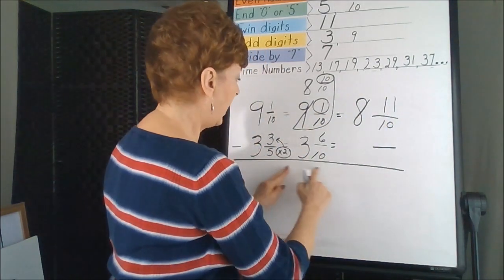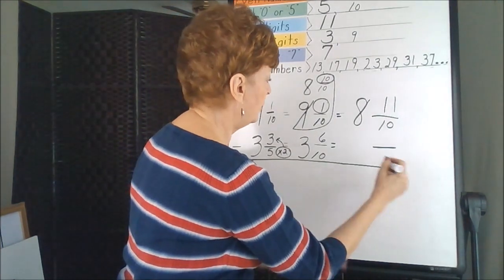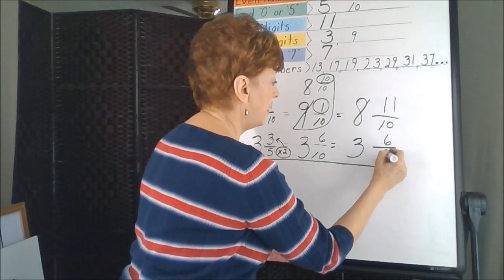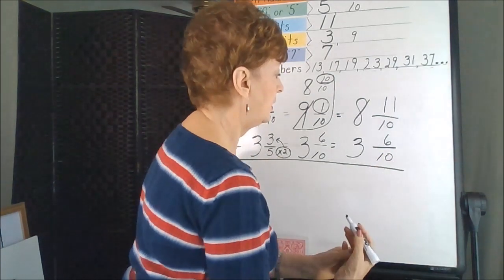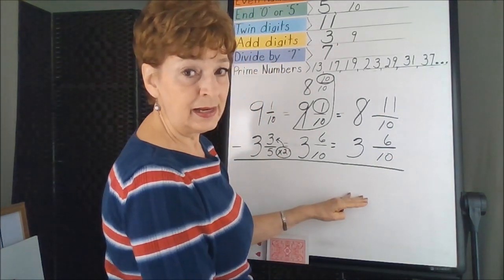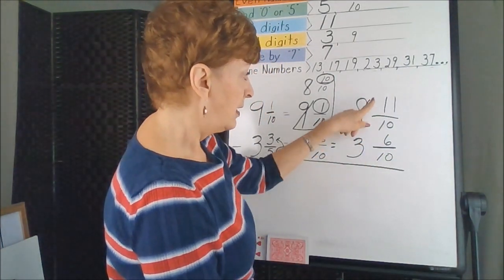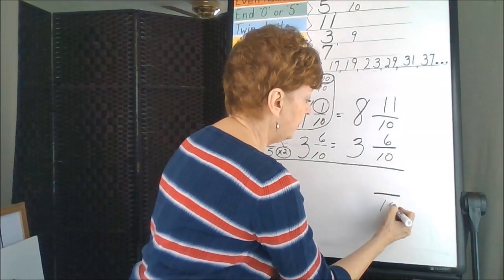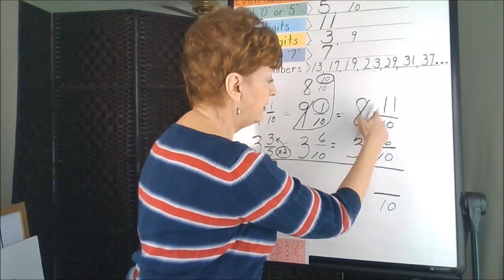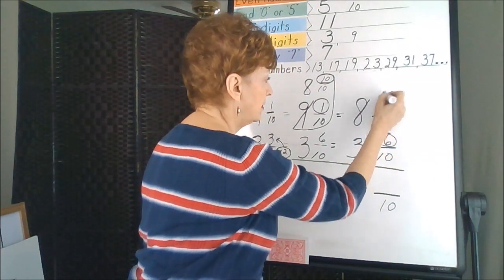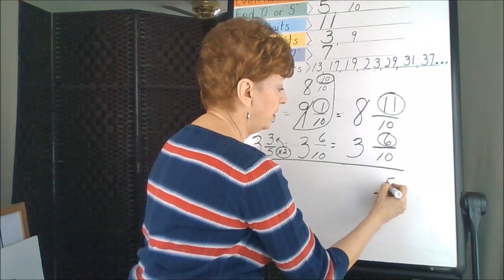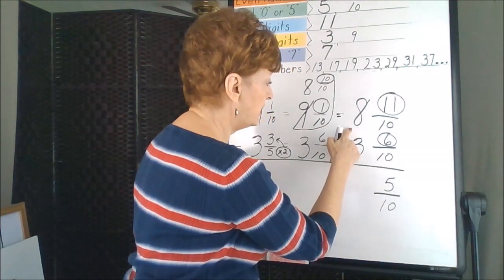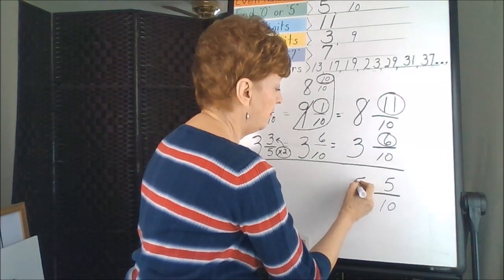This entire fraction just gets moved over into position. So this is a copy job. Now we're finally ready for subtraction. We're going to keep our denominators because they're the same. 11 take away 6 is 5. And then we're going to subtract our whole numbers, 5.